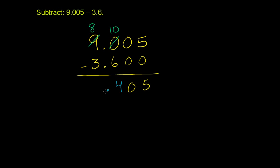You have your decimal right there. And then you have 8 minus 3 is 5. So 9.005 minus 3.6 is 5.405.